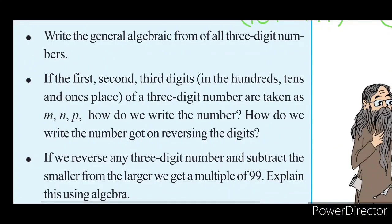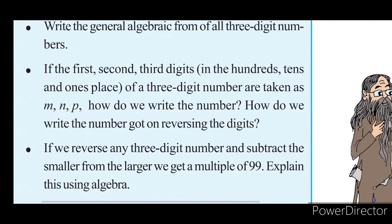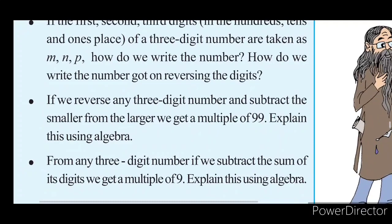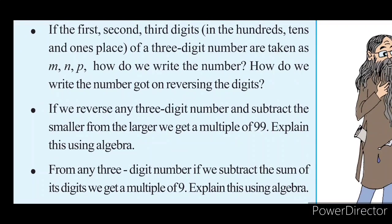If the first, second, and third digits of a 3-digit number are taken as M, N, and P, how do we write the reversed number? Reversing the digits gives 100P plus 10N plus M. Reverse any 3-digit number and subtract the smaller from the larger — we get a multiple of 99. Explain this using algebra.